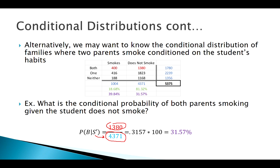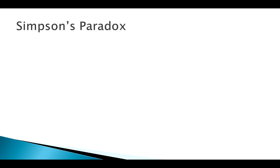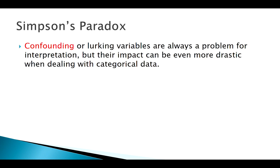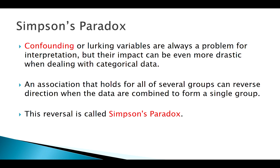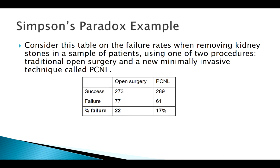Marginal distributions are interesting, and conditional distributions even more so. However, we have to be careful with contingency tables because of something called Simpson's Paradox. Simpson's Paradox shows how confounding or lurking variables can affect contingency tables: when we condition on a hidden factor, the results can look very different from the original raw data.